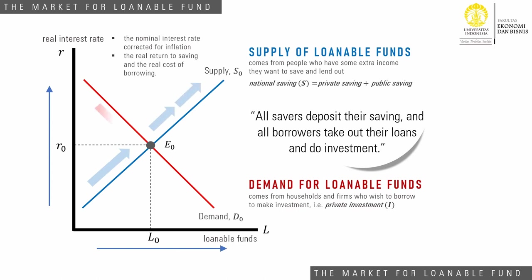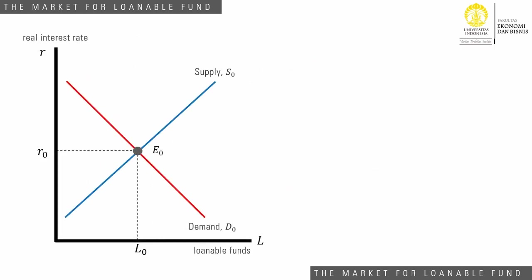On the other hand, the demand curve is downward-sloping because investment is negatively correlated with the real interest rate. Lower interest rates increase the demand for loanable funds because lower rates mean lower cost of borrowing for investors. The market for loanable funds is in equilibrium when the demand and supply curves intersect at a certain real interest rate and a certain amount of loanable funds. The market for loanable funds works similarly to how other markets work.